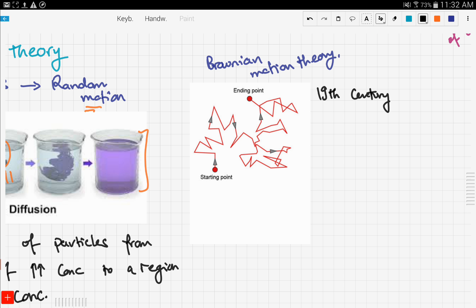This scientist said that while observing the motion of pollen grains on a droplet of water, he noticed that the pollen grains moved in a very random motion. This motion is shown by this diagram. He noticed that the motion is a bit random and it's moving in a zigzag, not moving in a straight line from the starting point to the ending point, but rather moving in a very random manner.